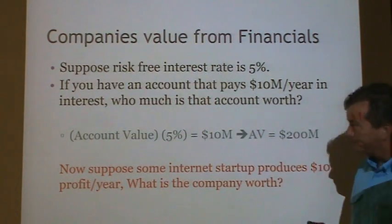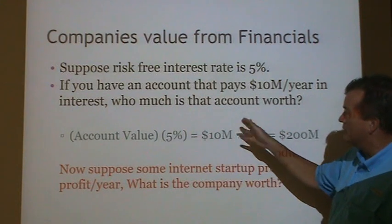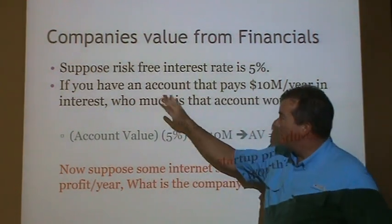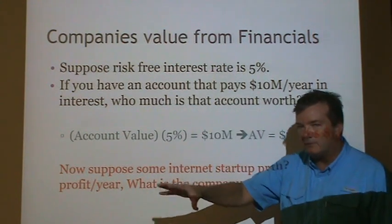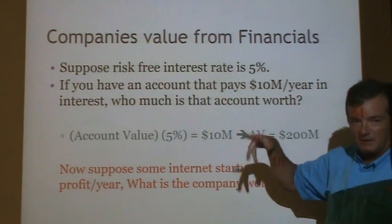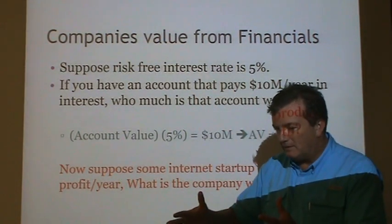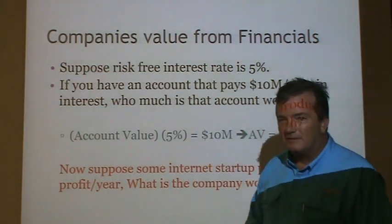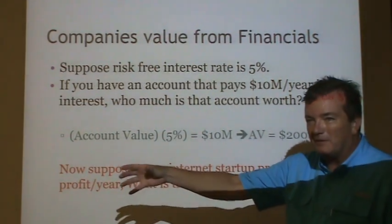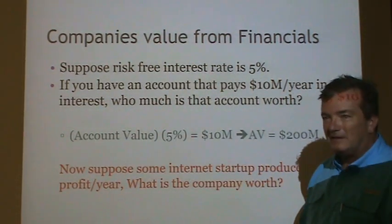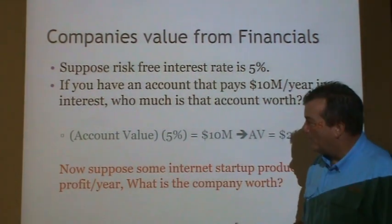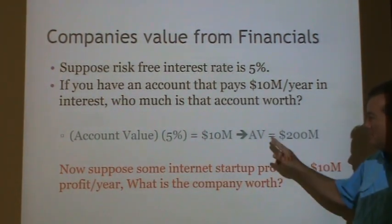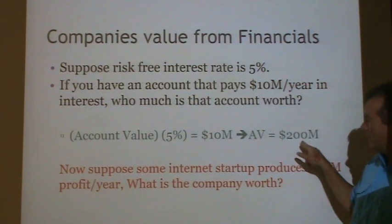We talked in a previous class about putting money into an investment. Suppose you had a risk-free interest rate of 5% — you could put money in a bank or buy safe bonds paying 5%. Suppose you own an account that is currently paying $10 million a year in interest. You have some amount of money, you keep getting 5% every year, and that comes out to $10 million a year. Whatever your account value is, 5% of that is the interest that comes out. If it's giving out $10 million a year, that means the account value is $200 million.